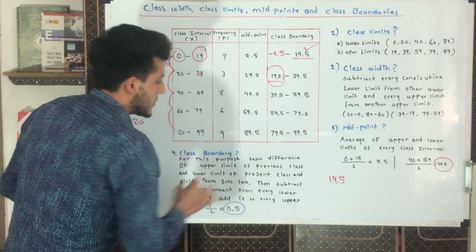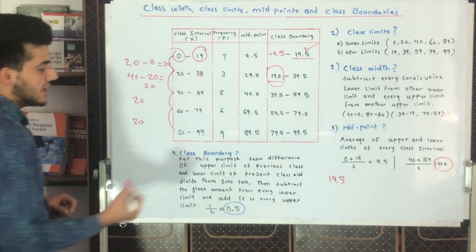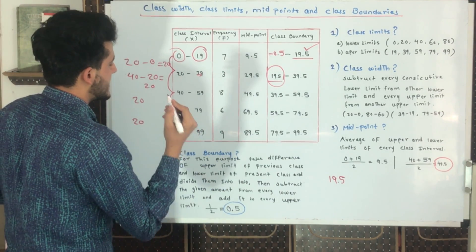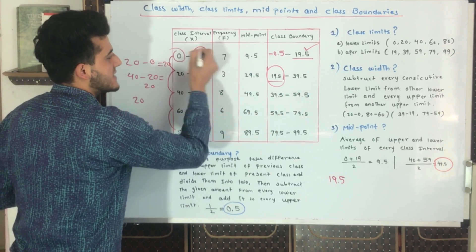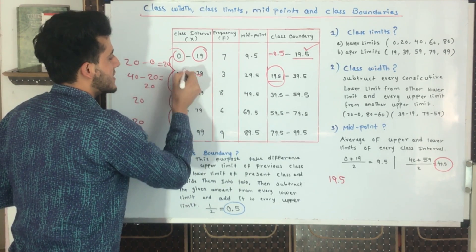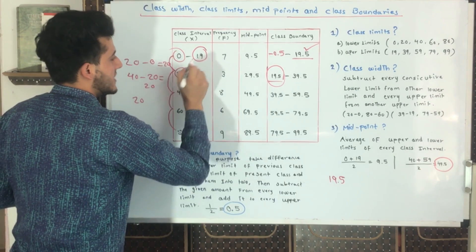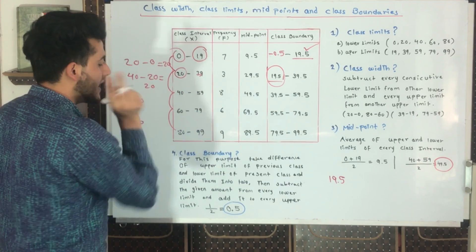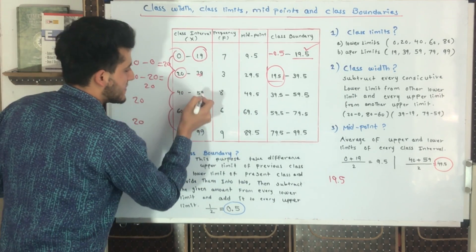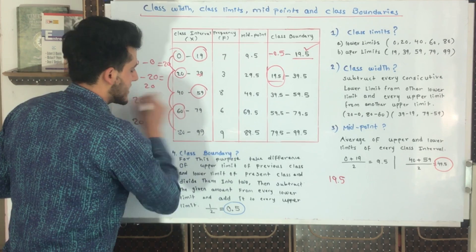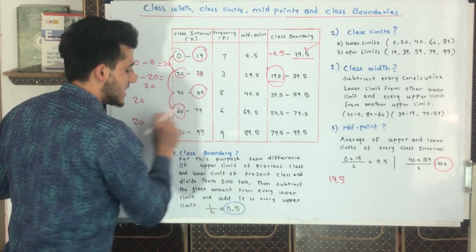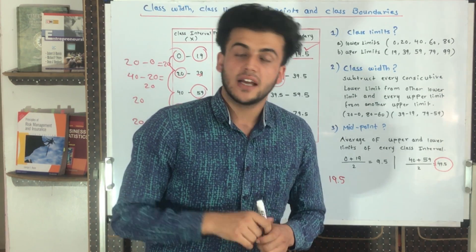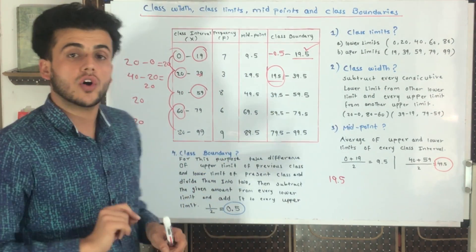How will we do that? For this purpose, take the difference of the upper limit of the previous class and the lower limit of the present class. We consider this as the previous class and this as the present class. The difference between 19 and 20 is one. We can take another class interval as well - the difference between 59 and 60 is also one.